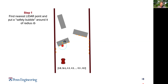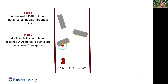We choose one of the two LIDAR beams that shows us the nearest obstacle — in this case the reading of 3.1, which is the closest LIDAR point. We put a safety bubble around it with a specific radius Rb. In step number two, we set all the points inside the bubble to distance 0. The bubble is detecting not only this specific point but also the points to the left and to the right. All non-zero points are then considered as free space.